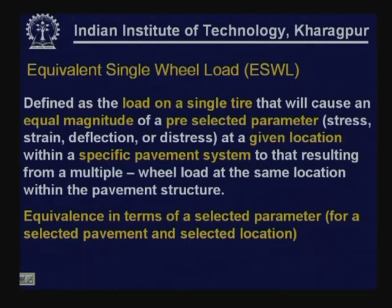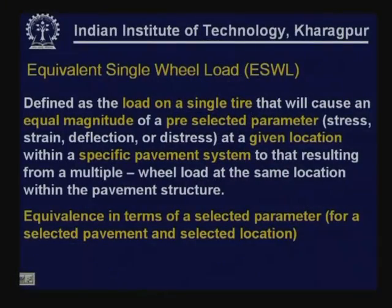The equivalence is in terms of deflection, stress, or strain produced by the equivalent single wheel load in a given pavement system at a given location. Different agencies select different parameters, pavement systems, and locations. Each agency must specify what pavement system is considered, at which location the parameter is calculated, and which parameter is used.